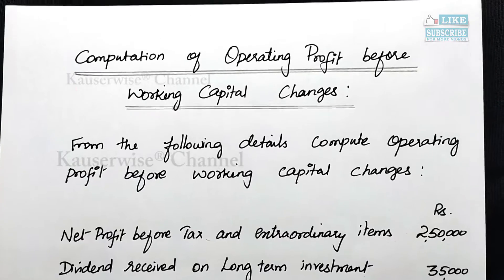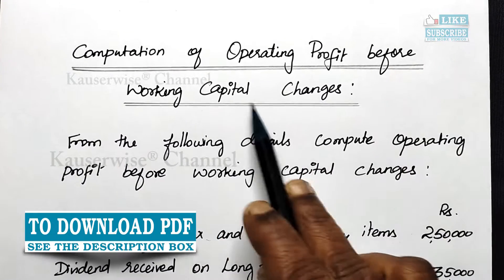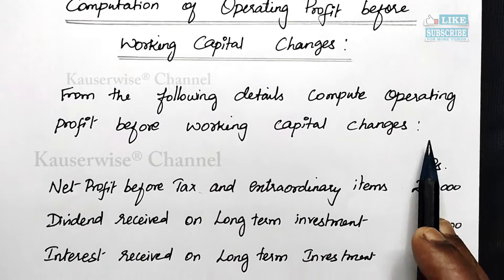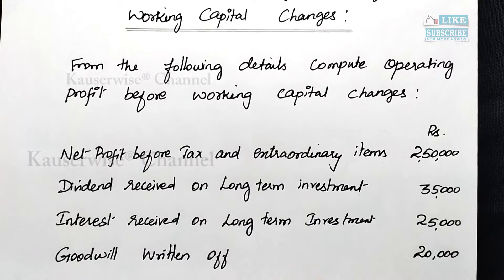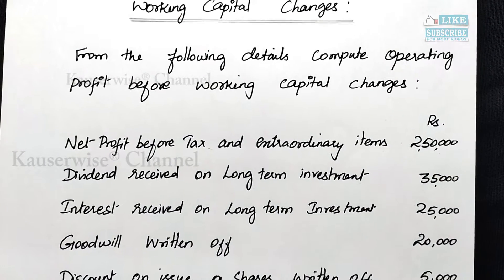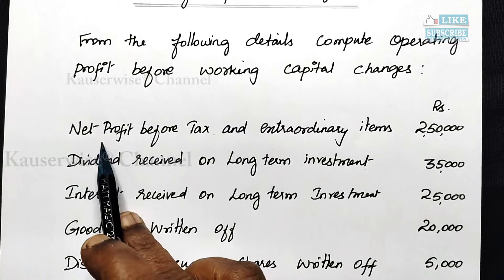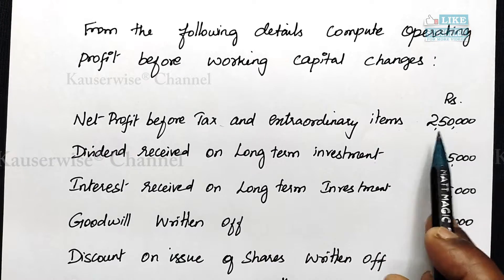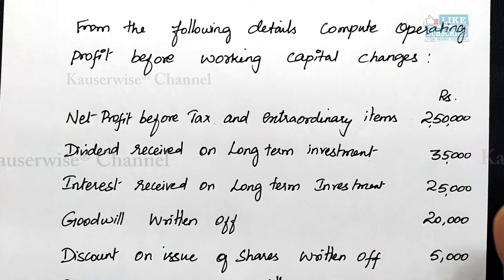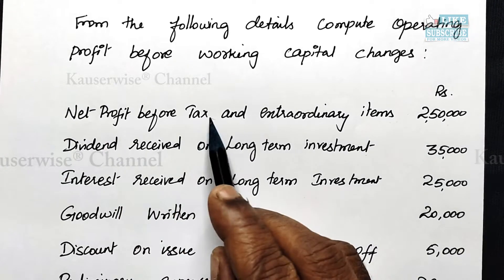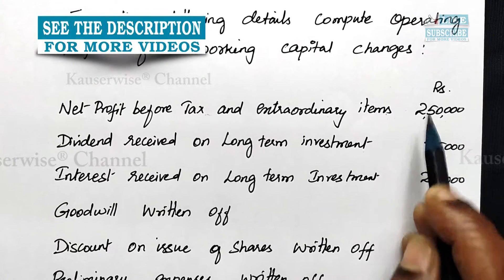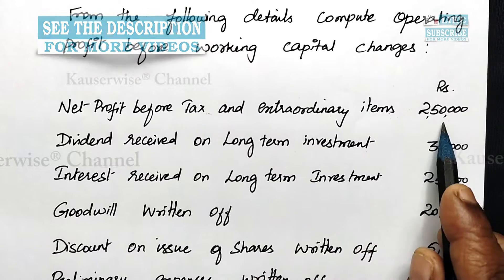Let us see the numerical problem: Computation of operating profit before working capital changes. From the following details, compute operating profit before working capital changes. In this problem, we do not have any current assets and current liabilities, so we are not going to do any working capital changes. The first item is net profit before tax and extraordinary item, which is the starting point. In this problem, it is given directly, so you can take the value as it is.